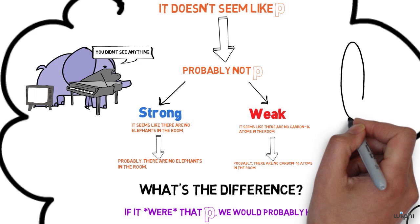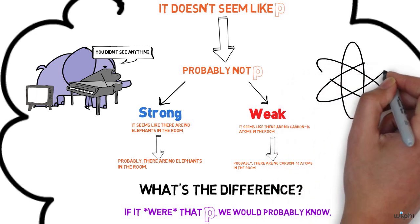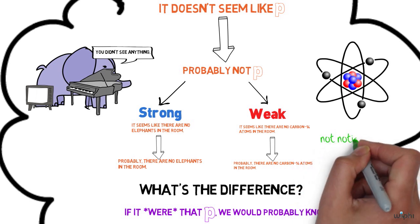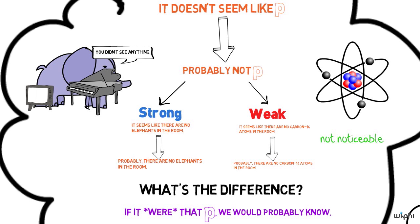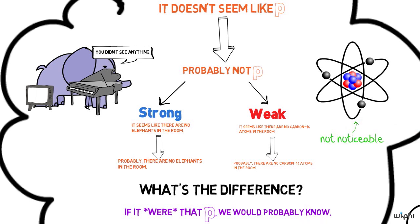But think about the carbon 14 atom. If there were a carbon 14 atom in the room, we would probably know it. That turns out to be false. You cannot detect a carbon 14 atom simply by glancing around the room. So sometimes these inferences are strong and sometimes they're weak.